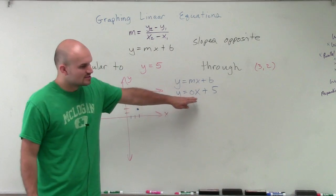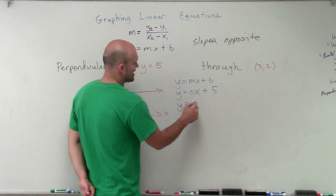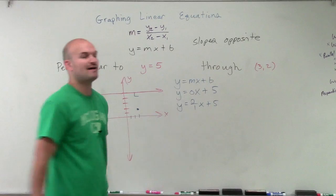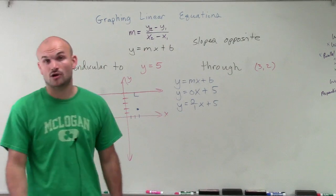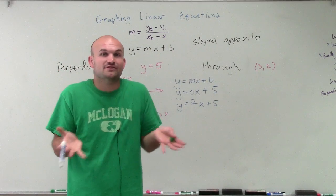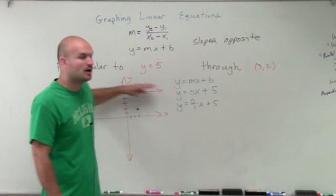Now, 0, we can write it, if we wanted to write it as a fraction, we could say 0 over 1x plus 5 because 0 divided by 1 is going to obviously be 0. Now, when we look at positive and negative, 0 doesn't have a value as far as it being positive or negative. It has just a slope of 0.